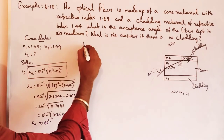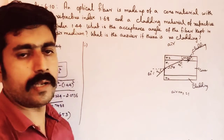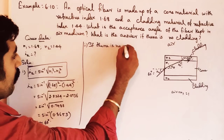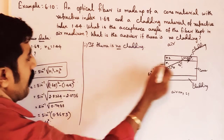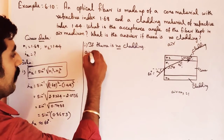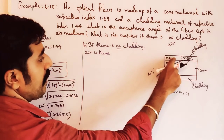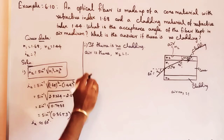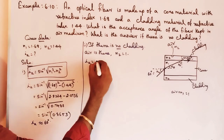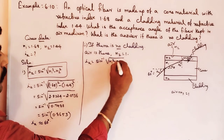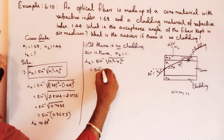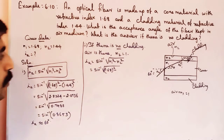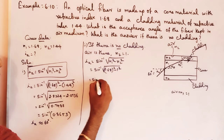Now, what is the answer if there is no cladding? If there is no cladding, then the second medium is air, and the refractive index value is 1. So for the acceptance angle: IA is equal to sin inverse of square root of (n1 squared minus n2 squared), where n2 equals 1.